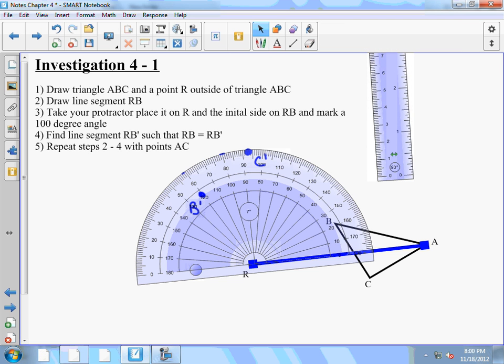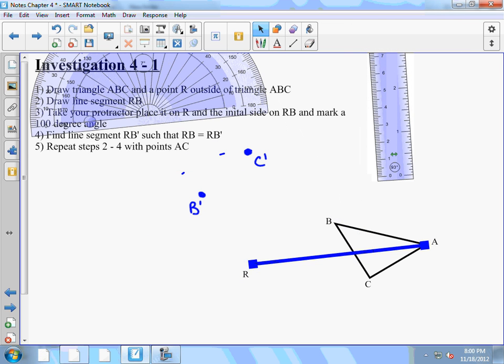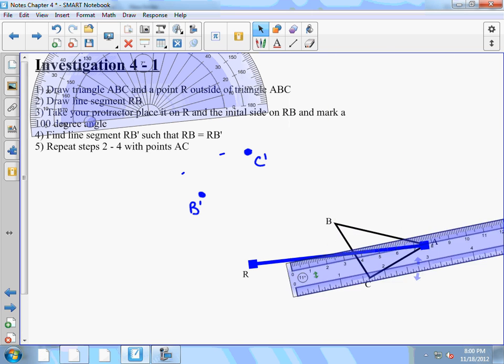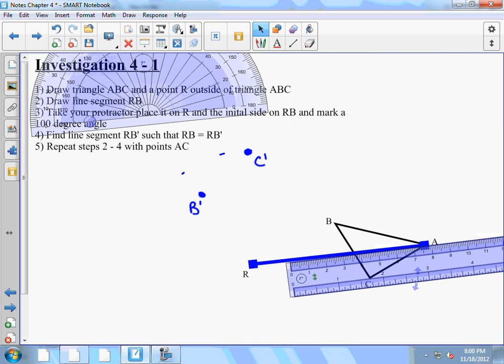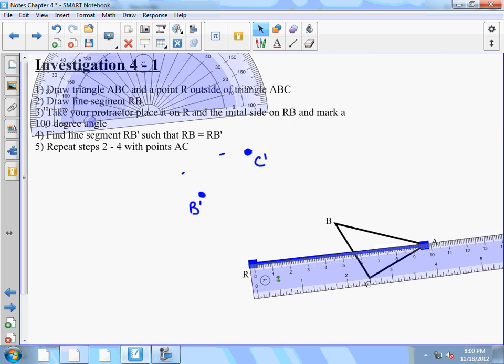And then we need to measure RA. Here I have it at about, looks like 9.7 centimeters.